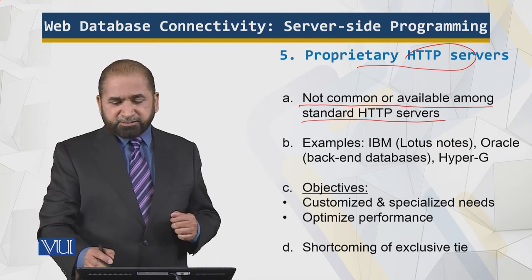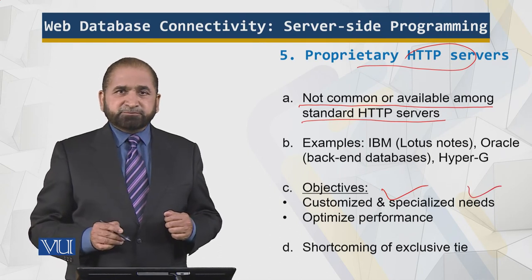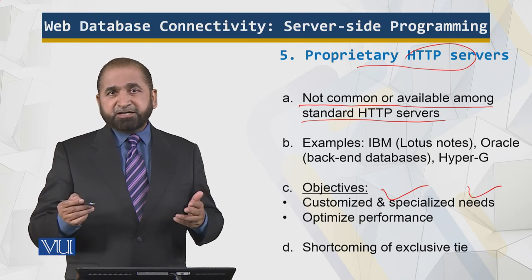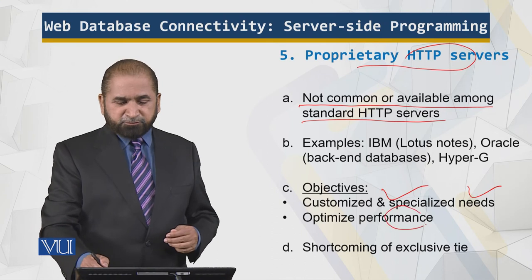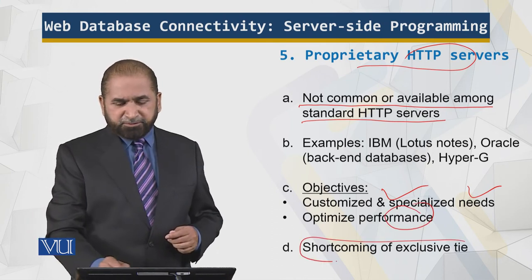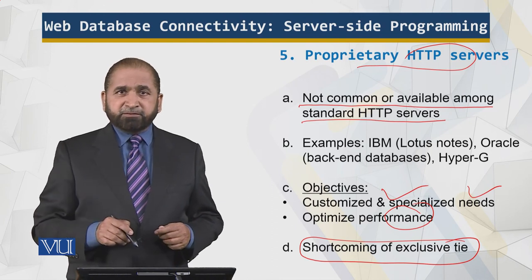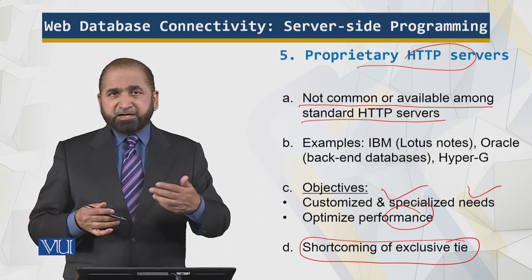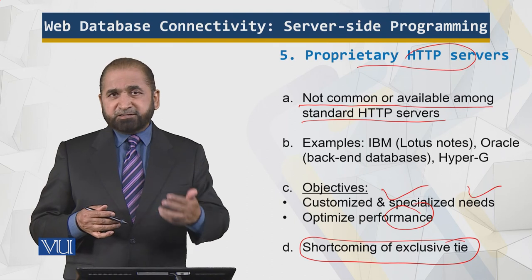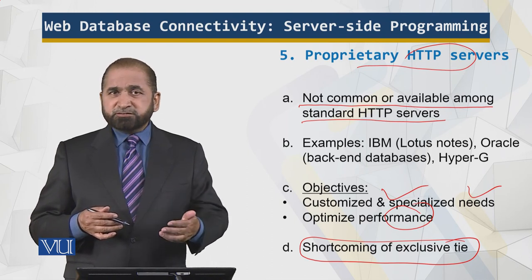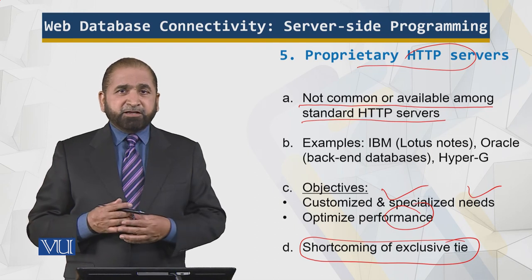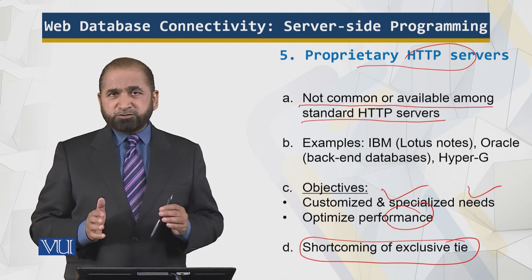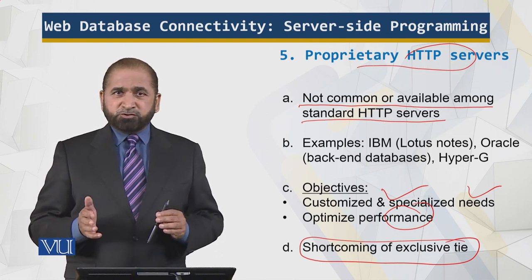So what are the objectives? Customized and specialized needs. Of course, it needs to have the facility and ability to provide performance. And remember, the shortcoming is the exclusive tie — you get tied to a certain ecosystem, to a certain technology, to a certain data format, to certain protocols. You get accustomed to it, and tomorrow if you need to port, then it is a problem. So you have to think carefully today about what you will be doing tomorrow, to make the right decision.